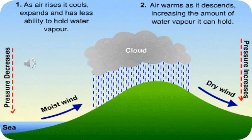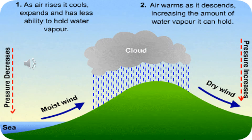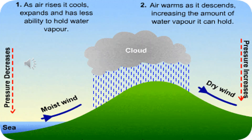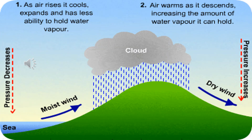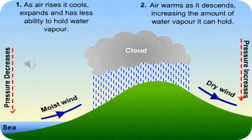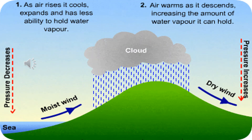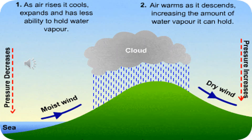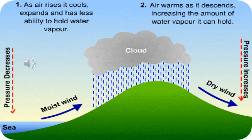Relief rainfall is also referred to as orographic rainfall. It occurs when moist air is forced to rise over a mountain barrier, such as the Himalayas north of the Punjab plain. As the moist wind hits the mountain barrier, it is forced to rise and at a certain altitude, condensation takes place. Most of the rainfall occurs on the windward side — the side facing the wind. As most moisture is used up on this side, when the wind descends towards the other side due to gravity, it has lost most of its moisture and causes very little rainfall on the leeward side.